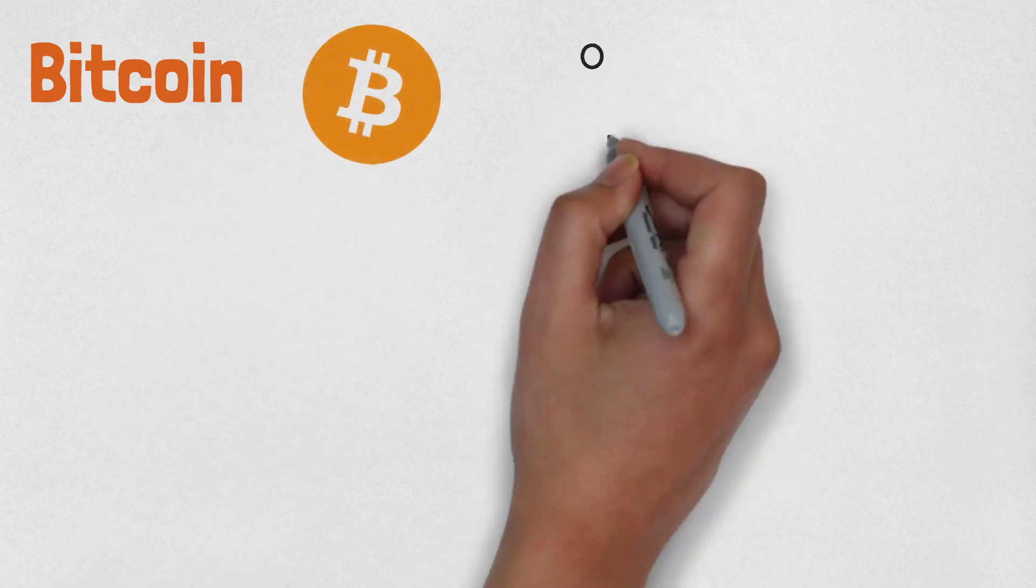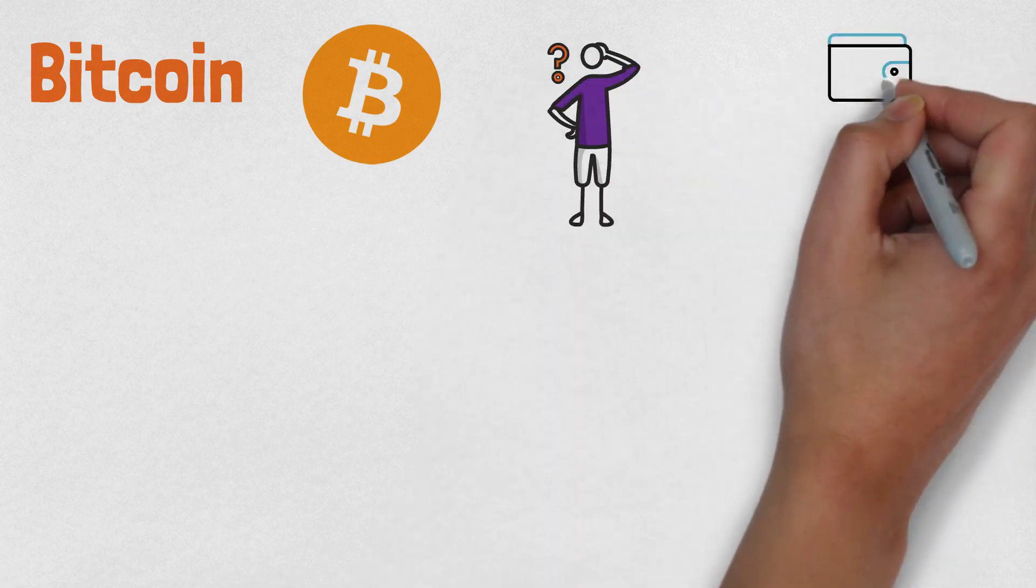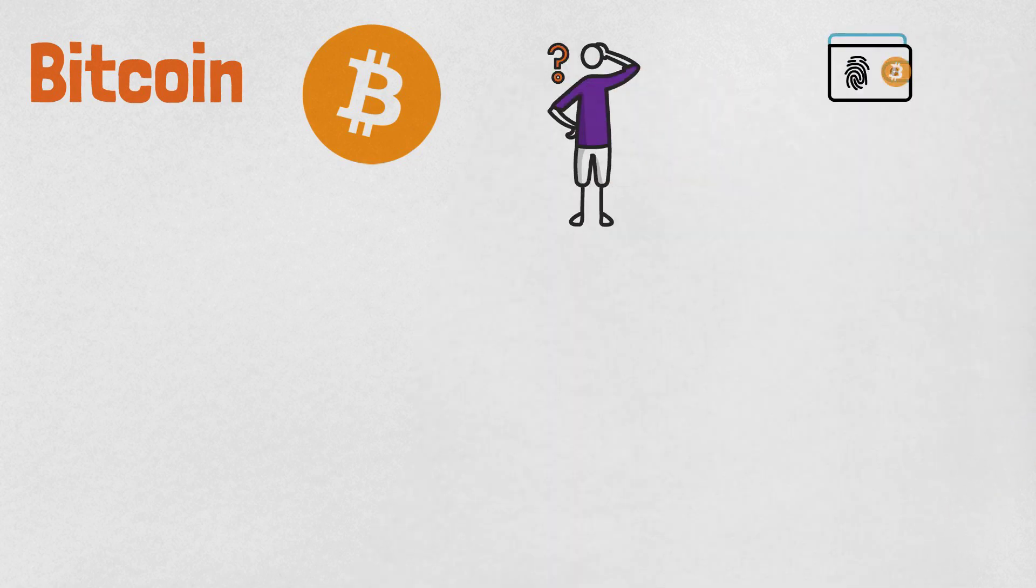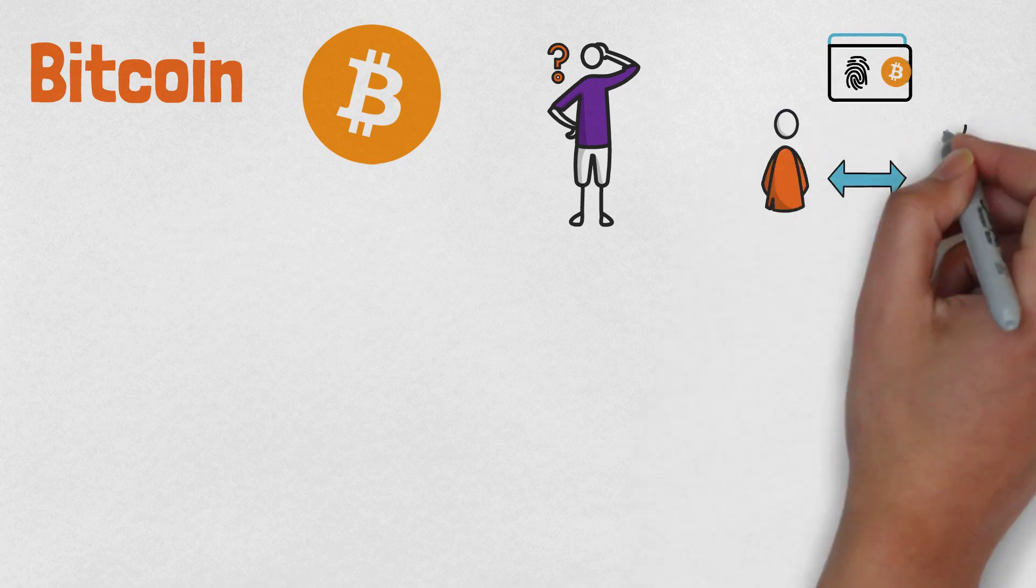Bitcoin is a decentralized digital currency that was created by an anonymous person called Satoshi Nakamoto. Satoshi described Bitcoin as electronic cash that allows online payments to be sent directly from one party to another.